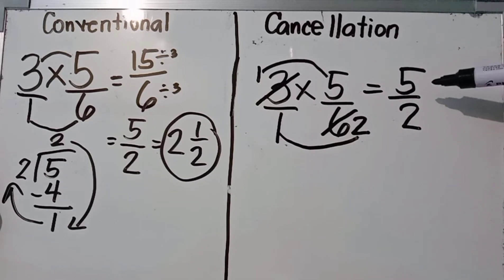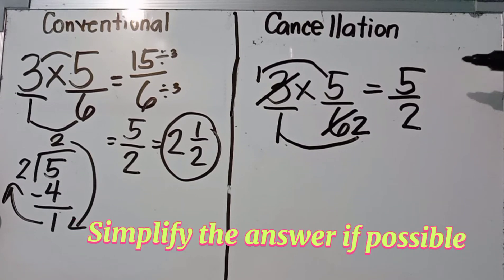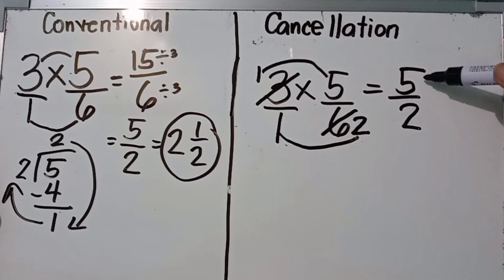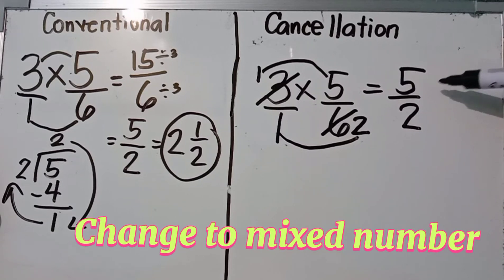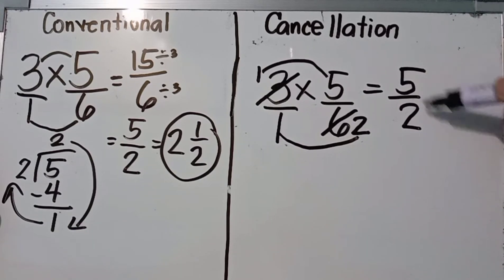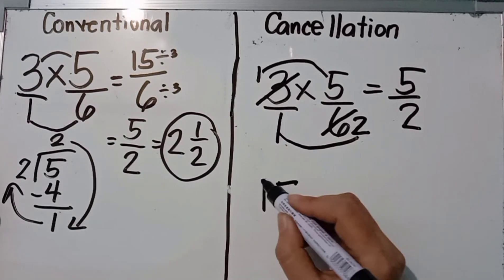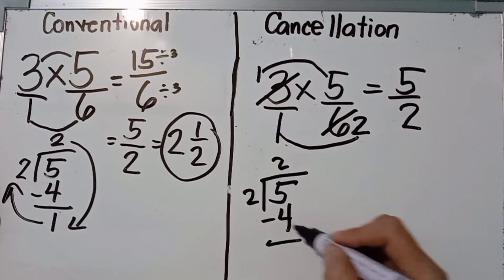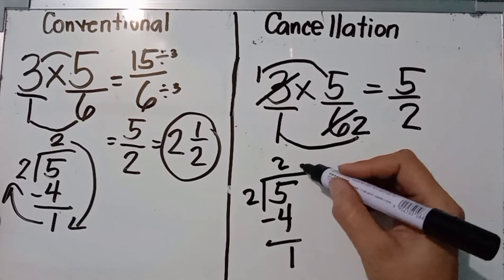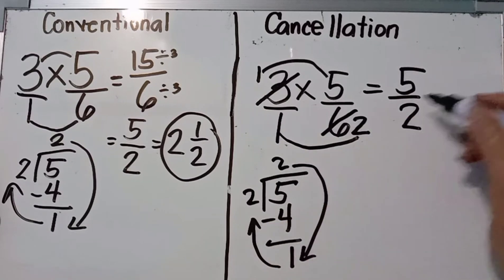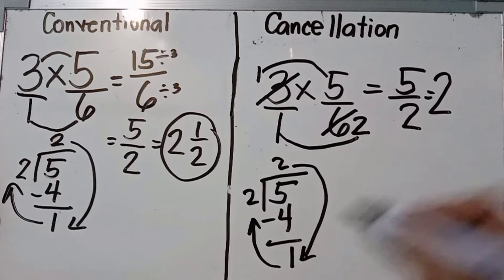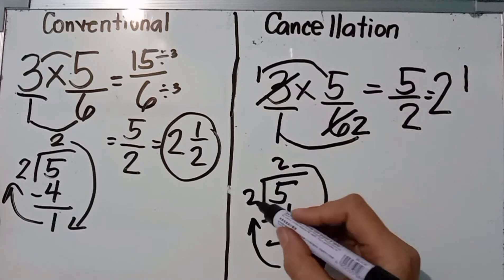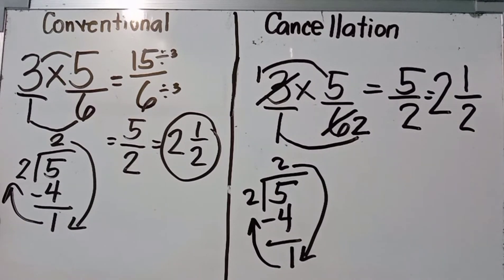The last step is to simplify the answer if possible. Five over two has no common factor, but it is an improper fraction, so we convert it to a mixed number. Five divided by two is two; two times two is four; five minus four is one. So five over two becomes two and one half. Our final answer is two and one half.